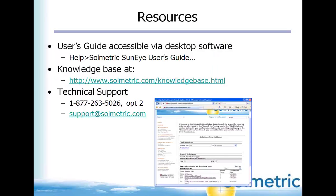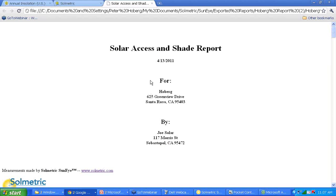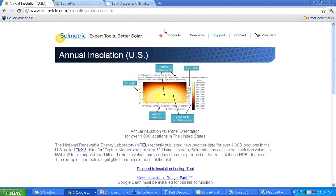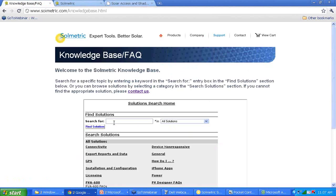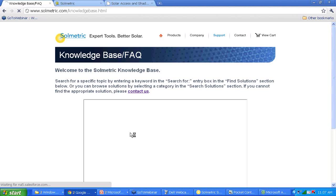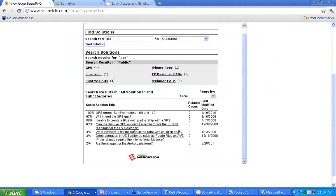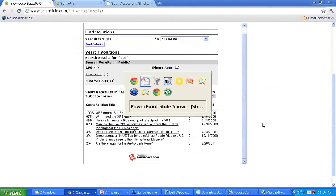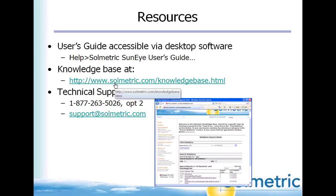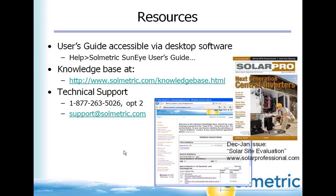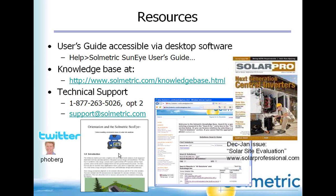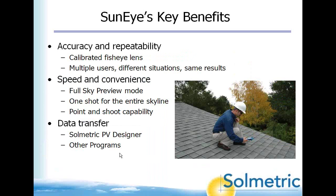Our online resources include user guides and a searchable knowledge base — for example, if you have a GPS problem, you can type 'GPS' and browse common questions and answers. We also have a technical support line open during California business hours and are responsive to emails. There are also referenced articles, application notes, and Twitter activity on our website's support section.